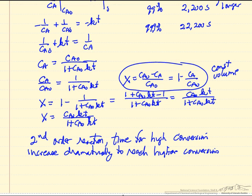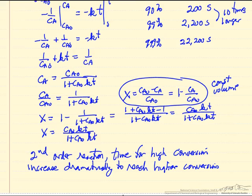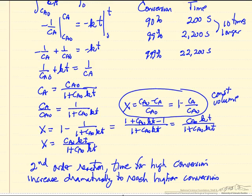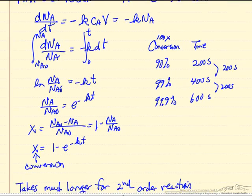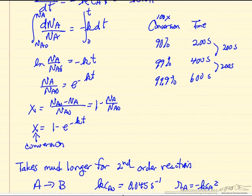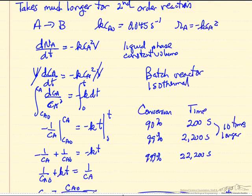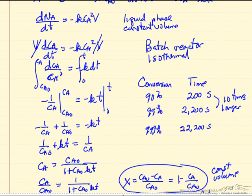For a second-order reaction, the time required increases dramatically to reach higher conversions — getting that last fraction of a percent converted takes much longer. Compared to first order, where it still takes longer but incrementally, the differences are really dramatic for a second-order process. This is something important to keep in mind when dealing with environmental problems.